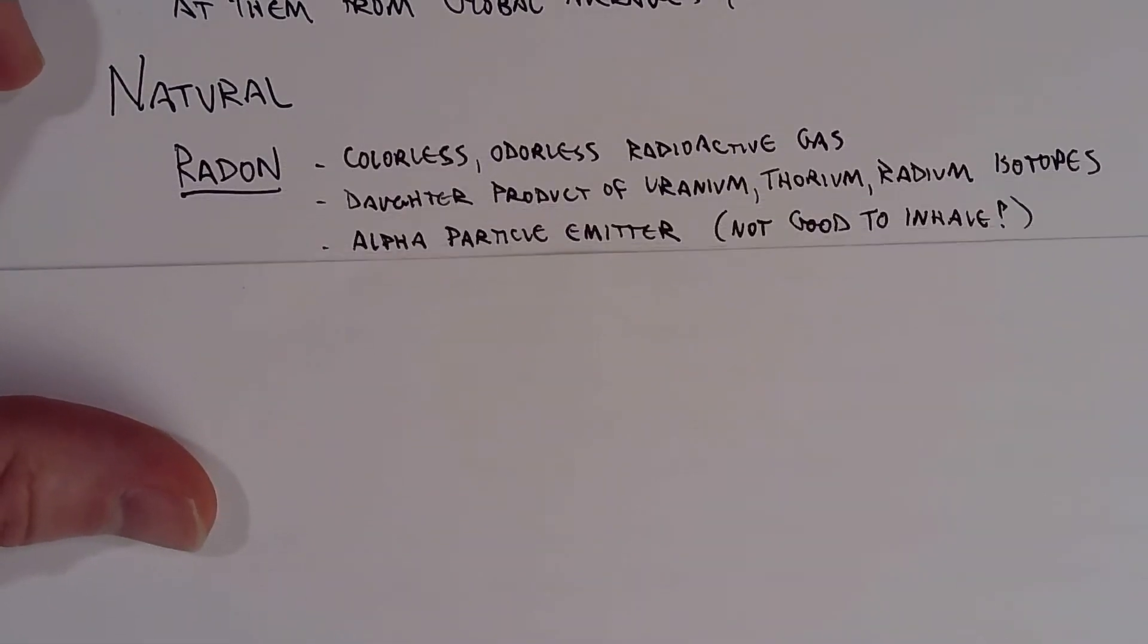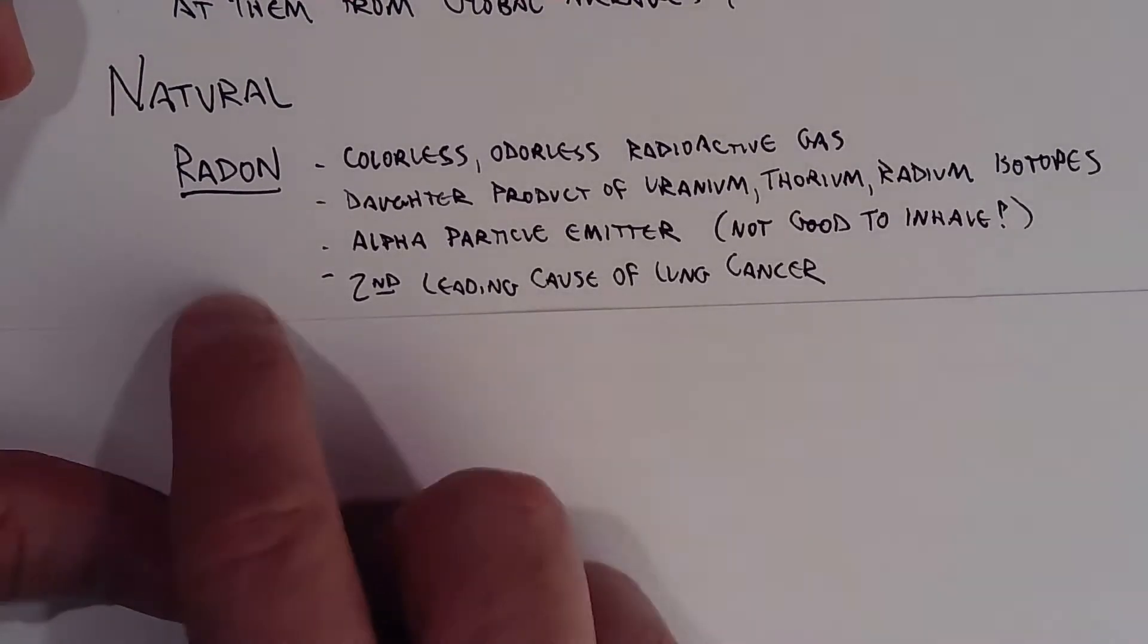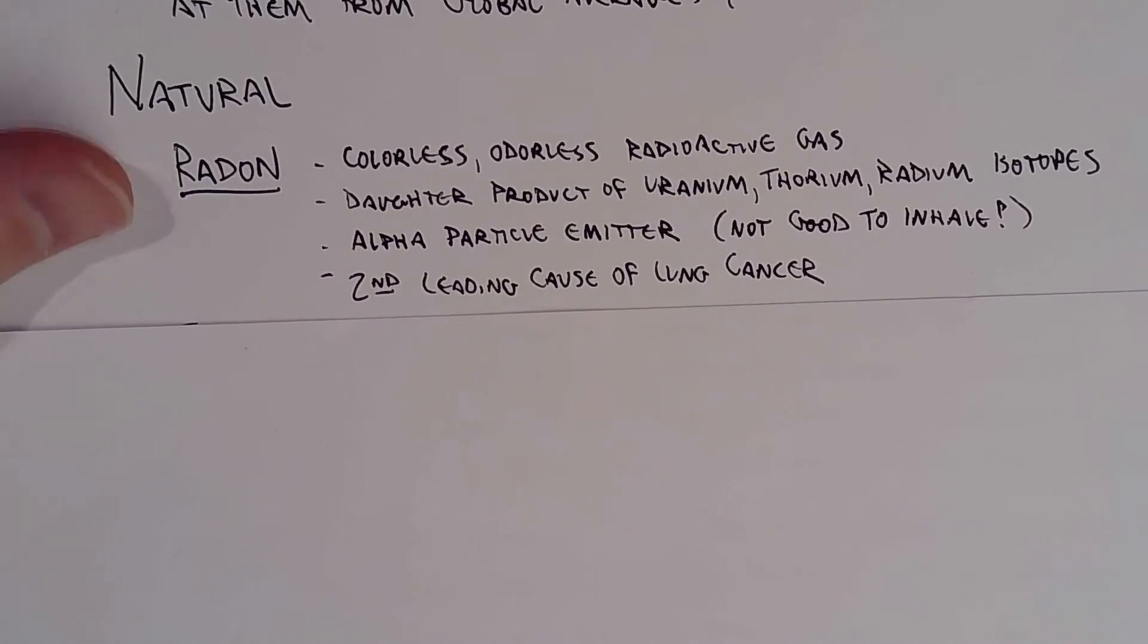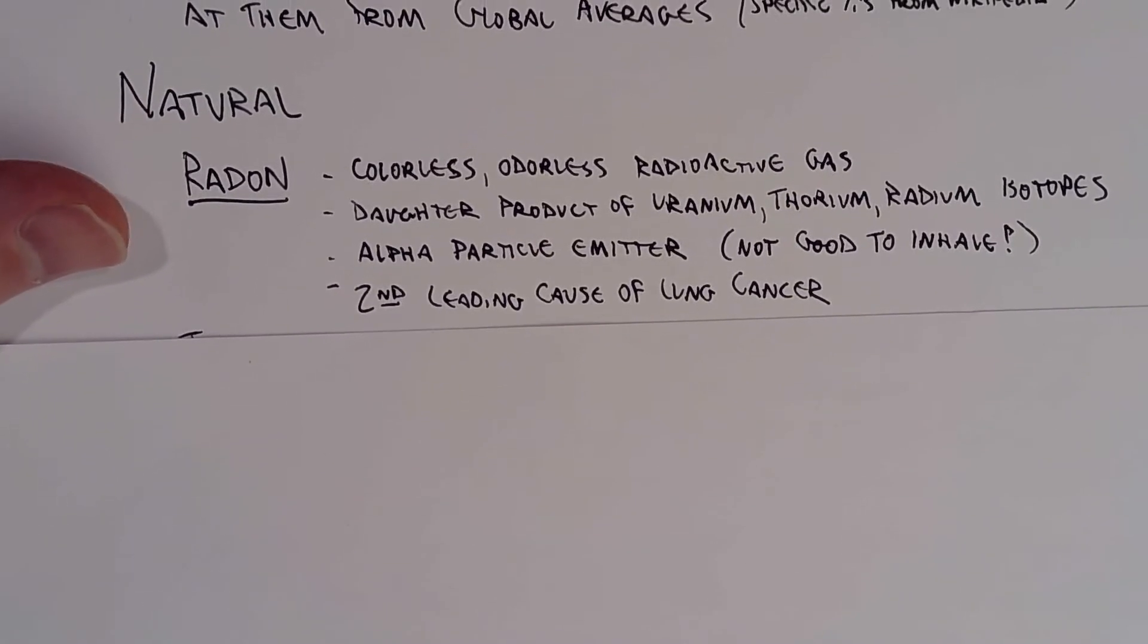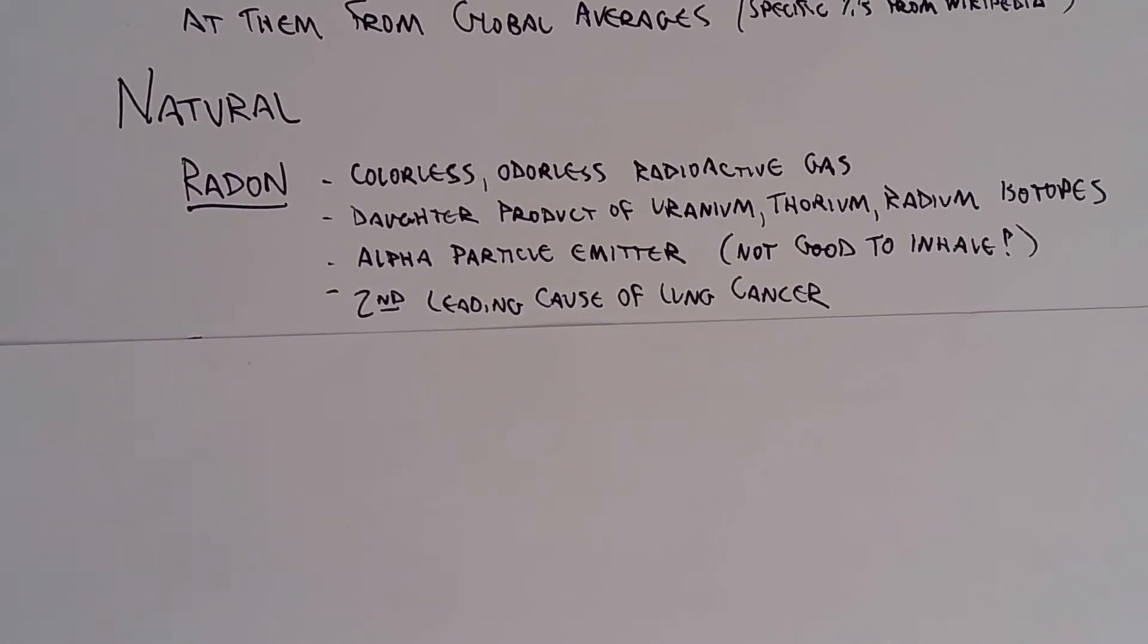So taking a look at some of that stuff, the big player, I would say - well, I don't want to give anything away too much early, but radon. Now many of you might have heard about radon. If you're a homeowner, you probably had to get your home tested for radon before you bought it or before you're going to sell it. Radon is a colorless and odorless radioactive gas. It is a daughter product of a couple different isotopes, and the idea is that it's a gas that seeps through the ground, seeps through other materials, and it is an alpha particle emitter.